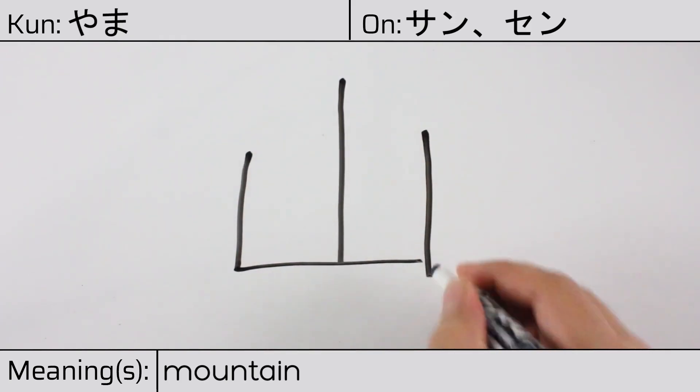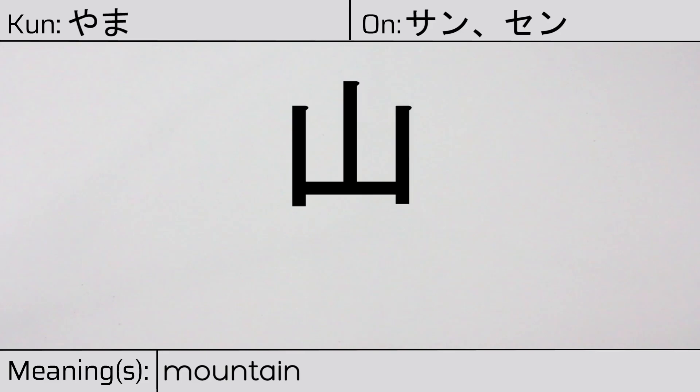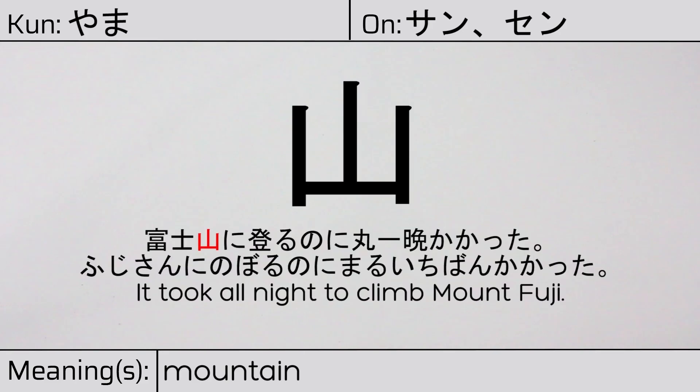You can remember this kanji by thinking of it as looking like a set of mountains. Our example sentence is: Fujisan ni noboru no ni, maruichiban kakatta — It took all night to climb Mount Fuji.